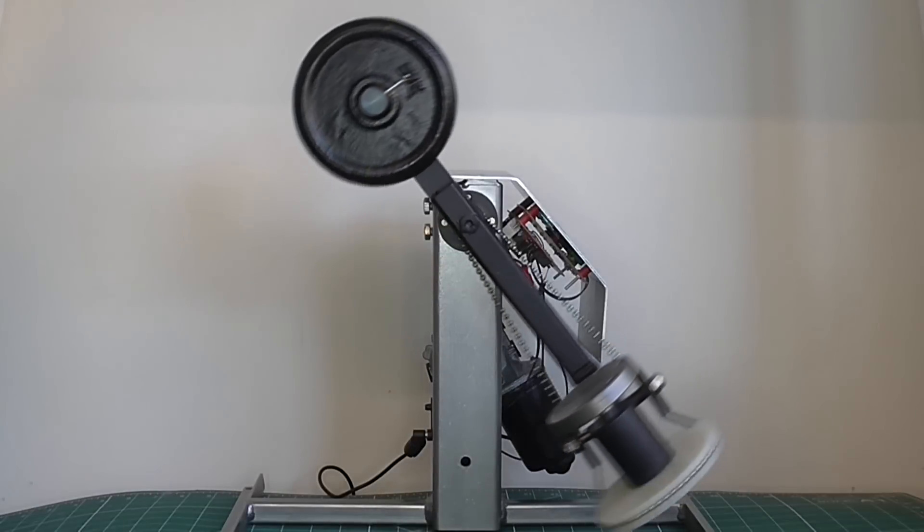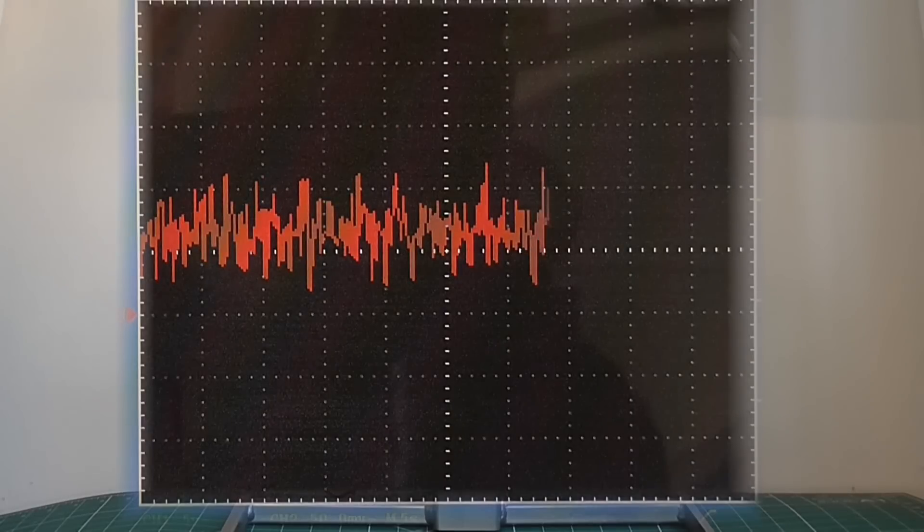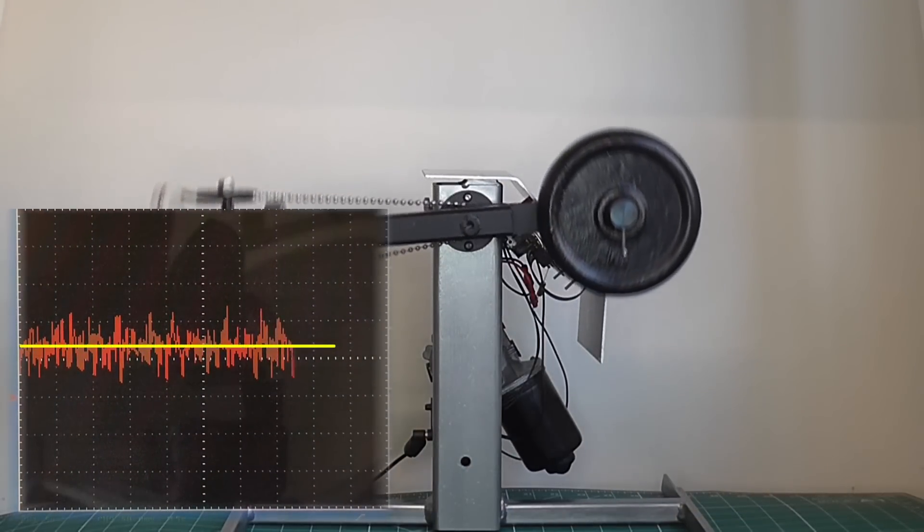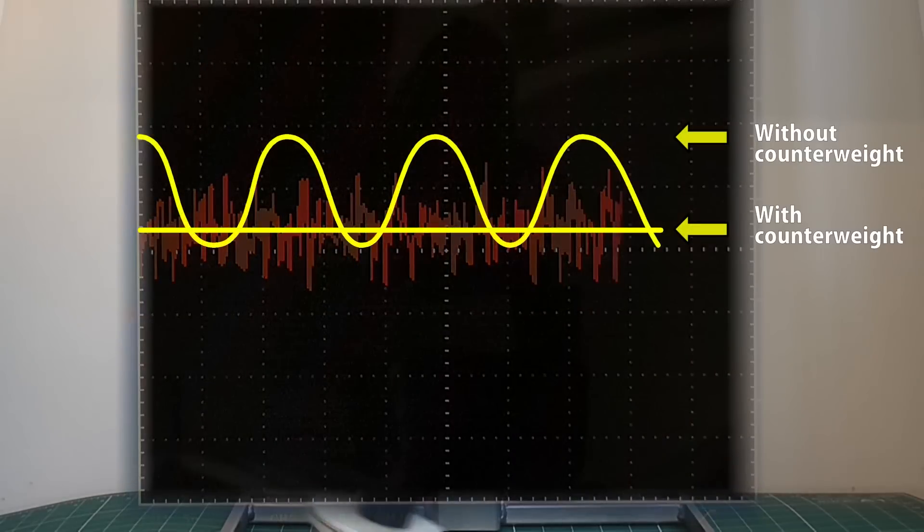Compare that to running with the counterweight, and you can see the difference. Not only is the trace much flatter, the peak current drawn is also much less, meaning I can use a smaller power supply.